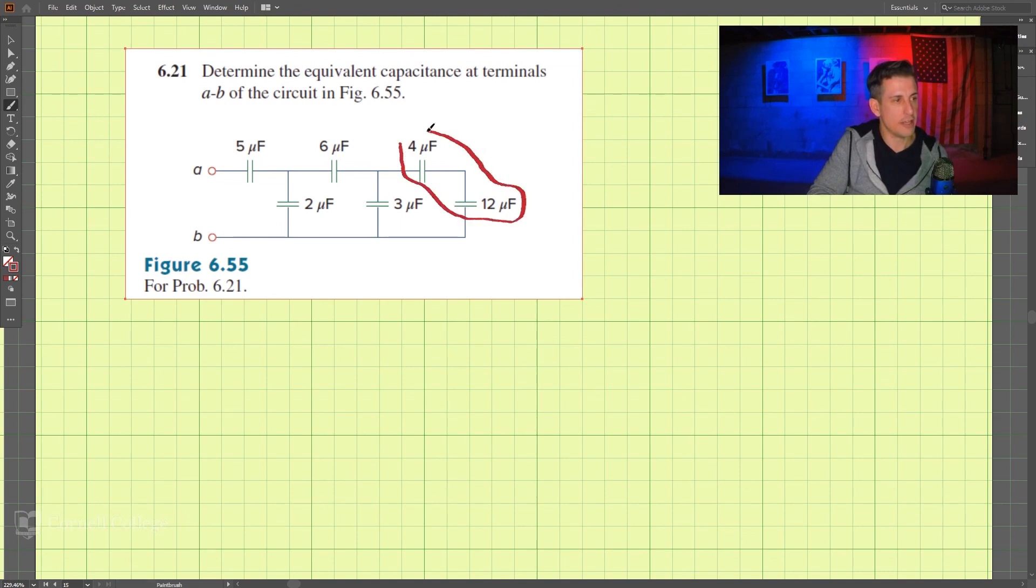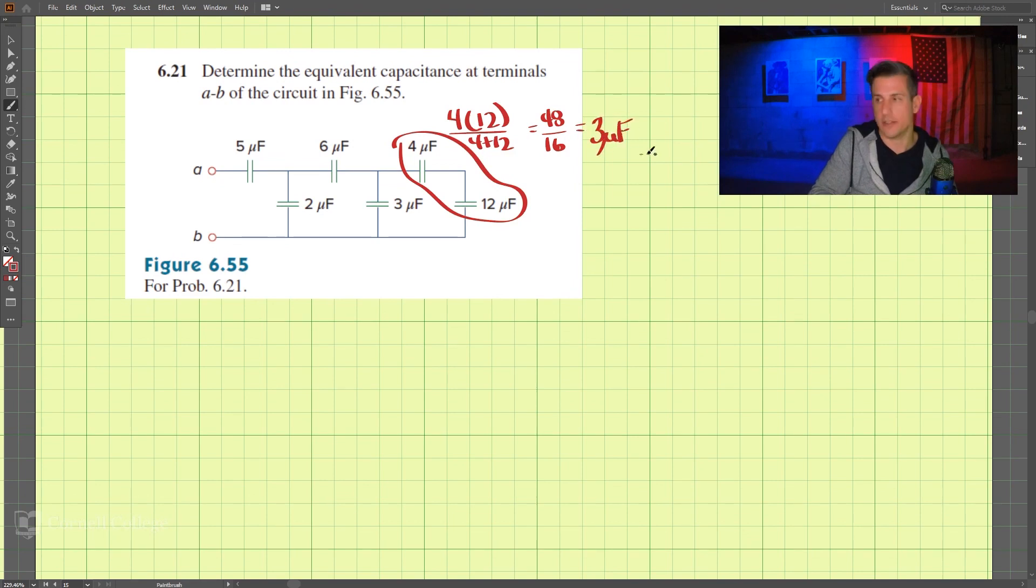Those are in series. So we have 4 times 12 divided by 4 plus 12. So that is 48 divided by 16, which is equal to 3 microfarads.